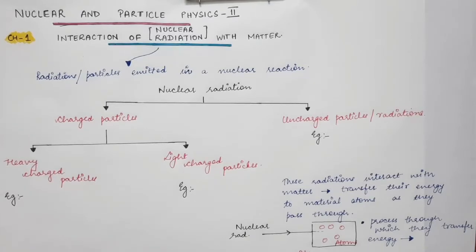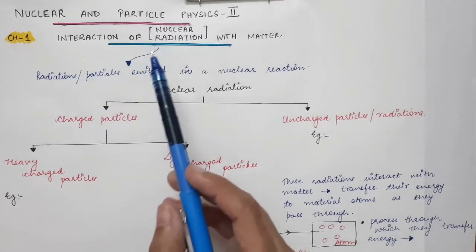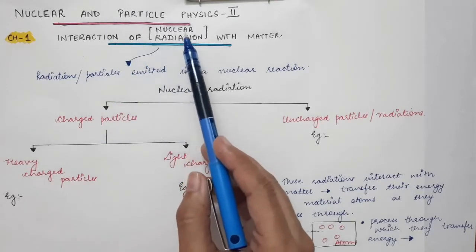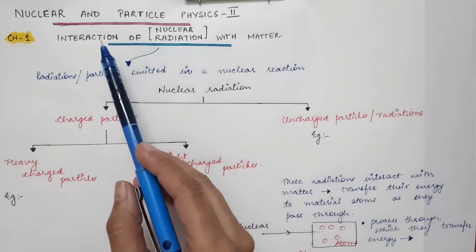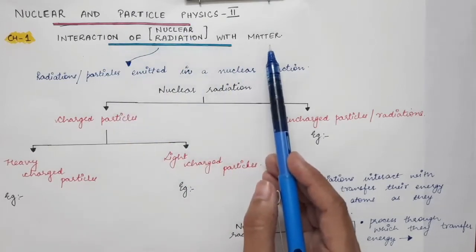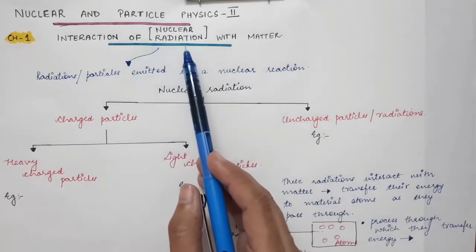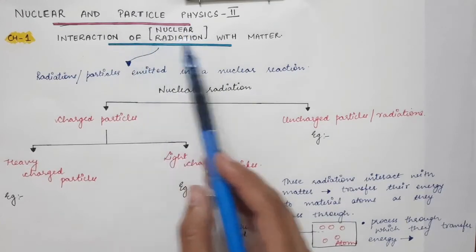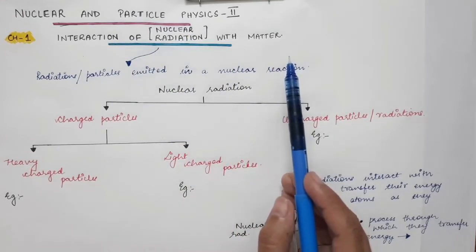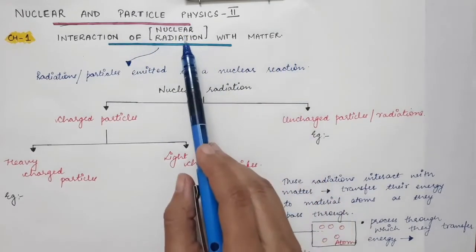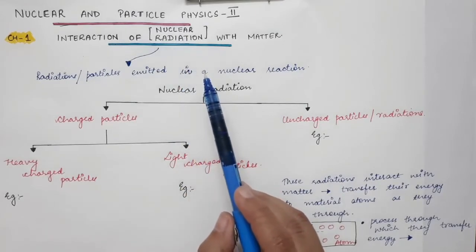In this lecture, I am going to give a brief introduction to the first chapter. In the first chapter, we will see how nuclear radiations interact with matter — that is, how these radiations interact with the material medium in which they are traveling.